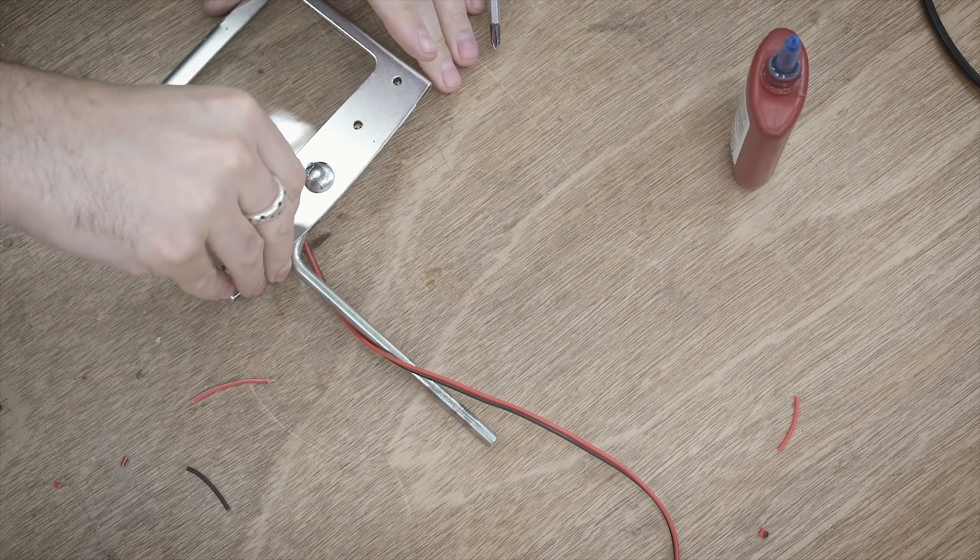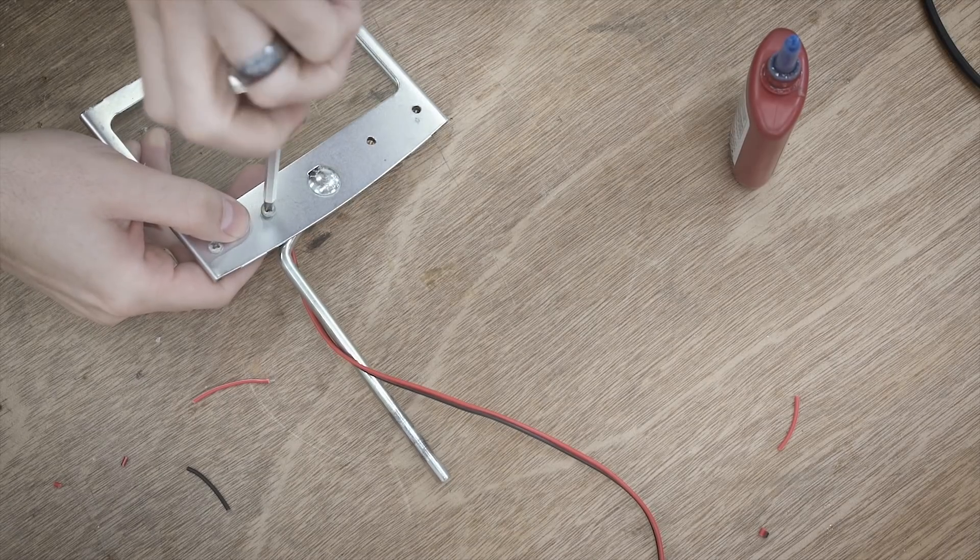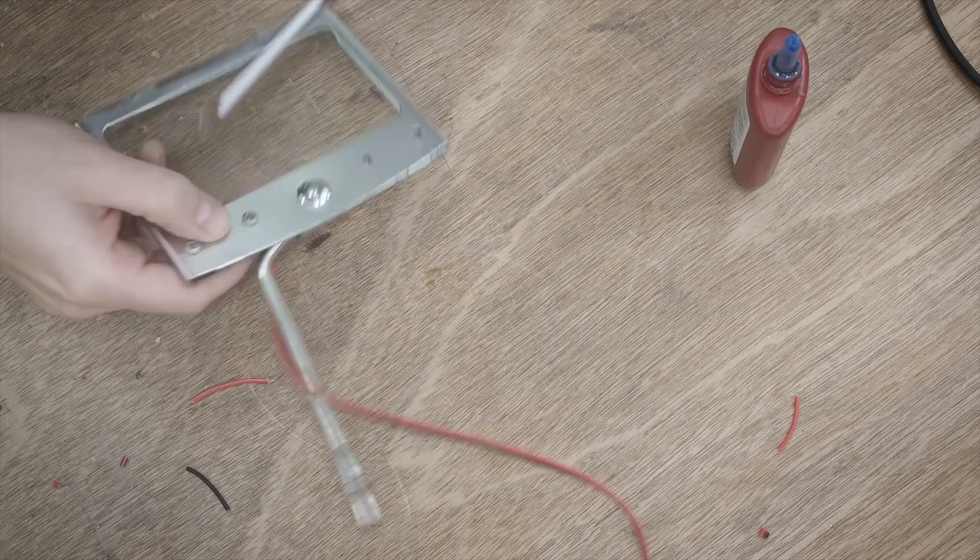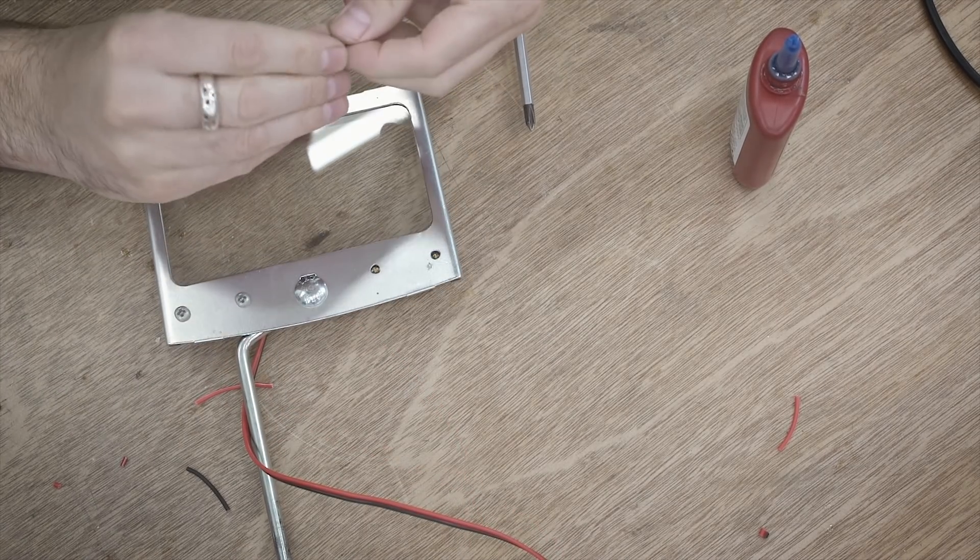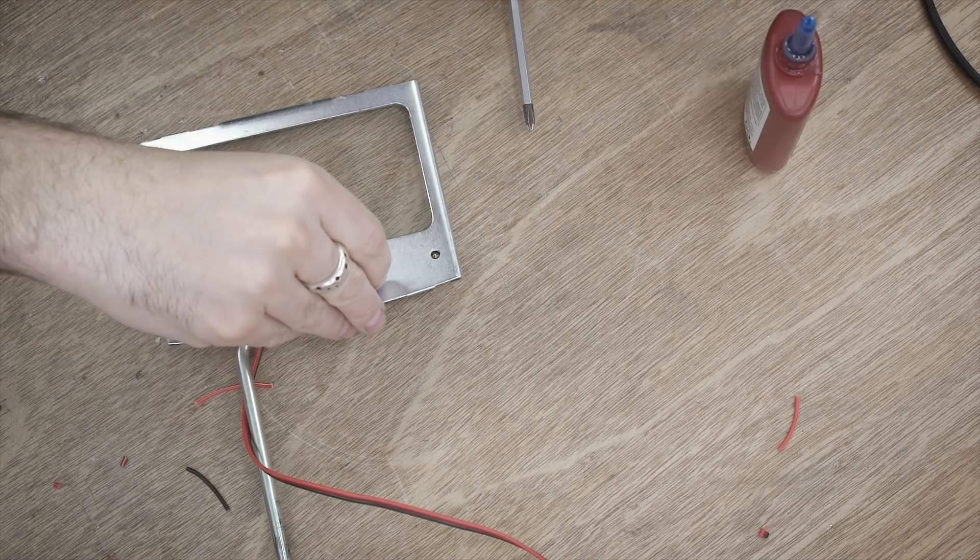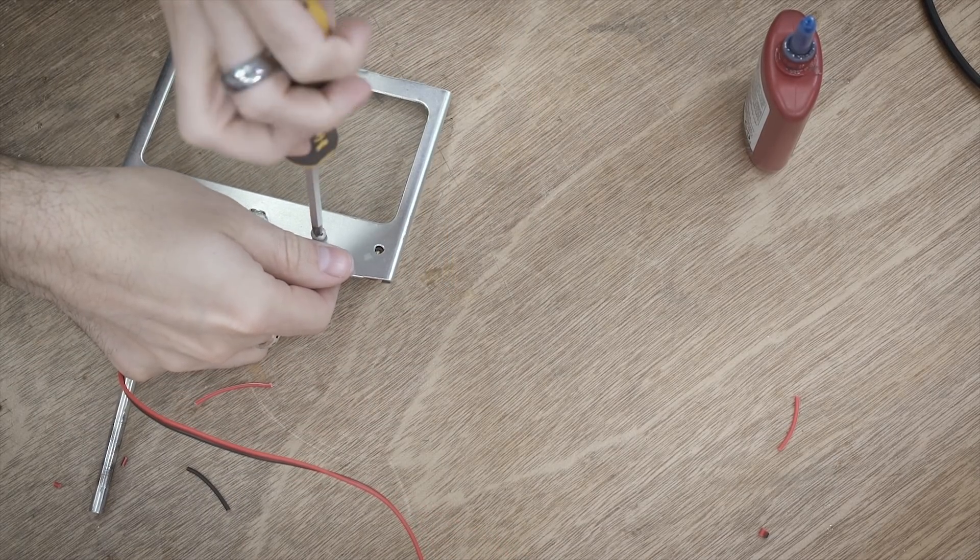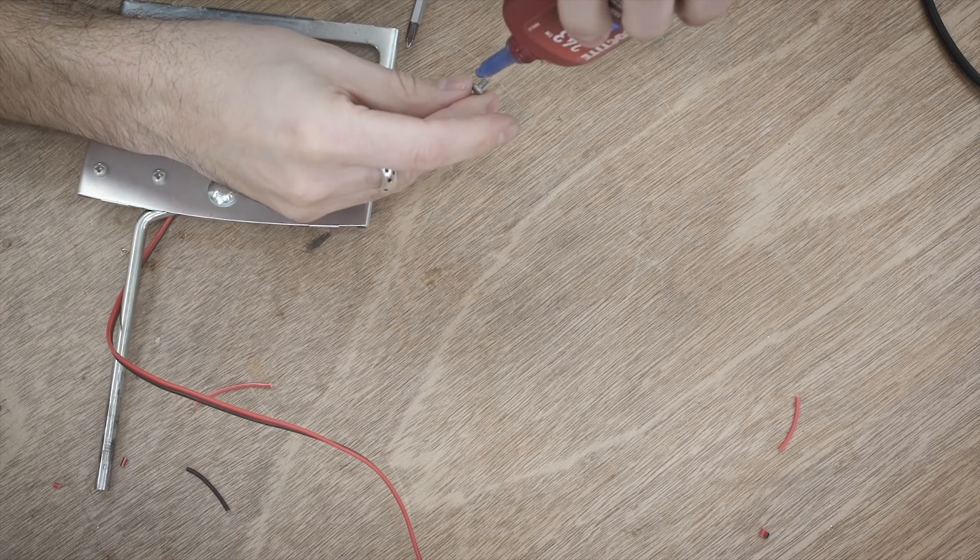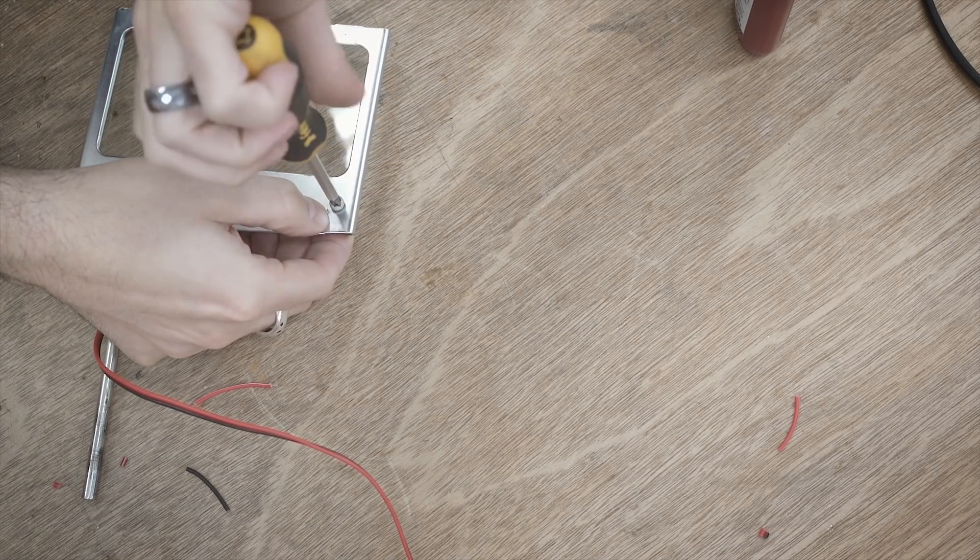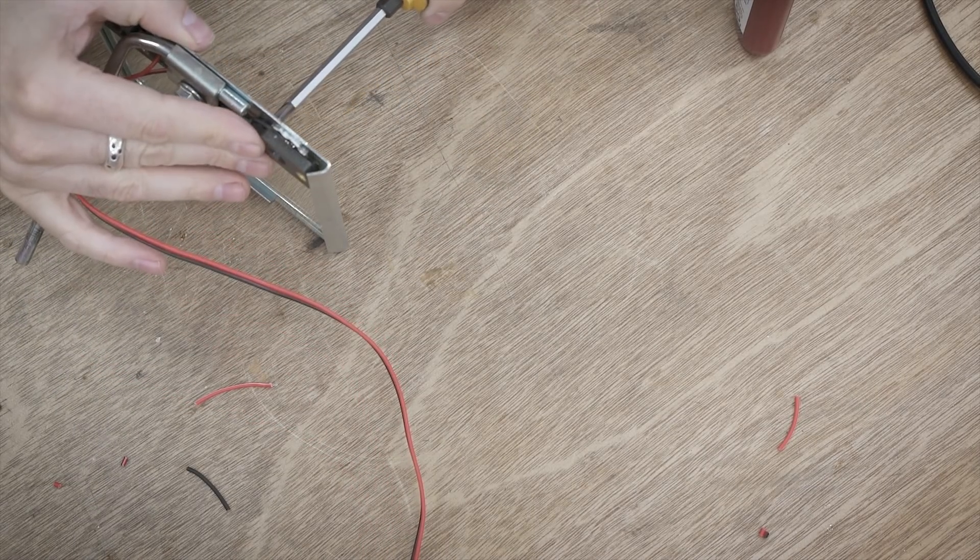I did end up using Loctite here for a couple different reasons. One, there's going to be some vibration, so having some thread locker is a good idea. But secondly, because the little 3D printed frame sits up from the shield a little bit, if you tighten it really tight it's going to bend and bow and deform that, so you don't really want to tighten it all the way. The thread locker will keep those in place because these screws aren't exactly going to be tight.